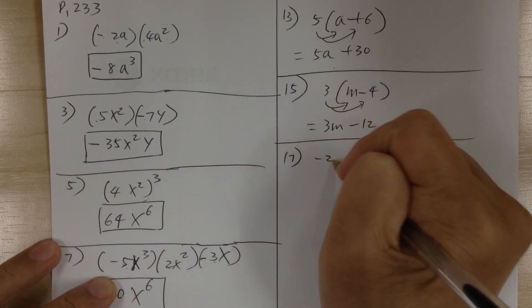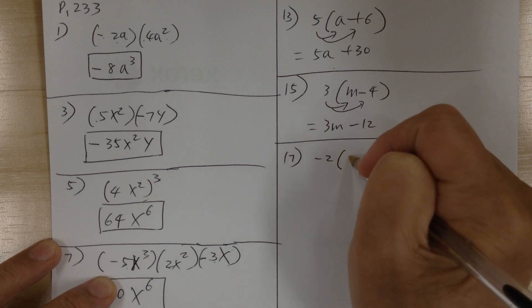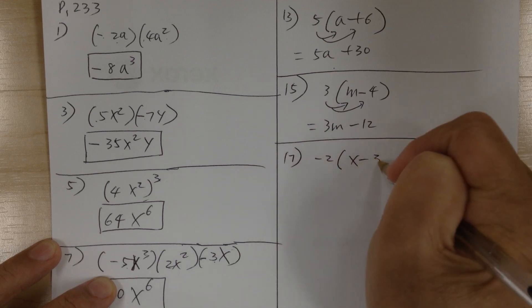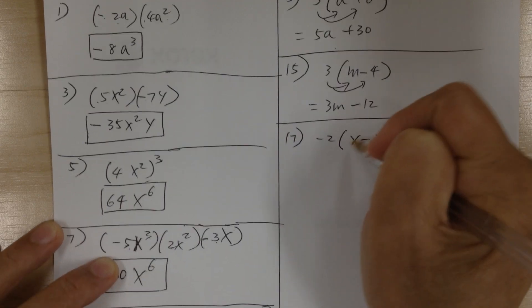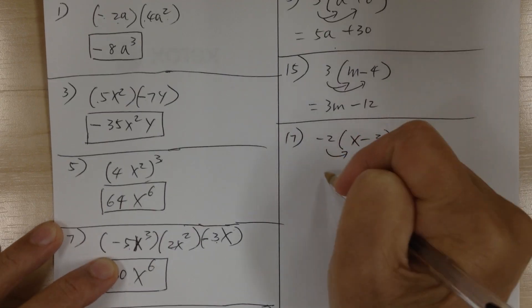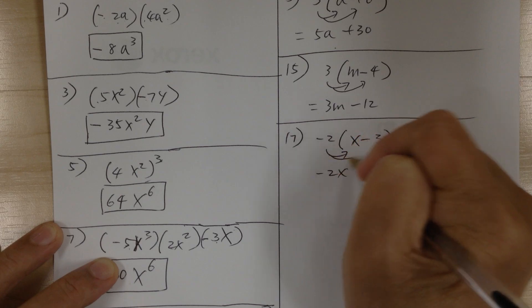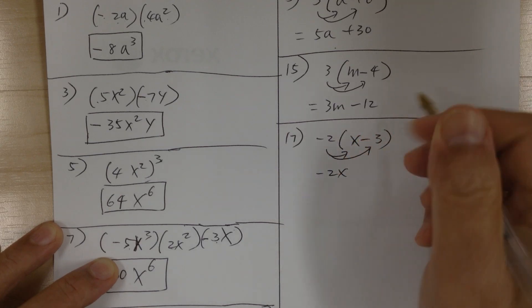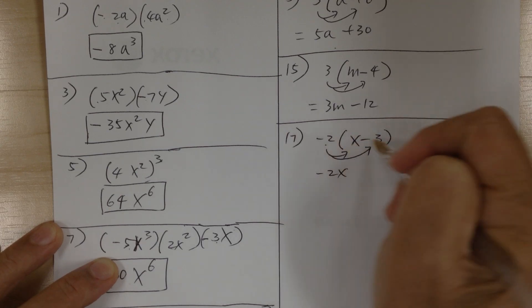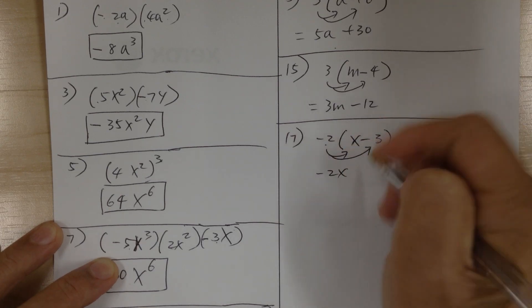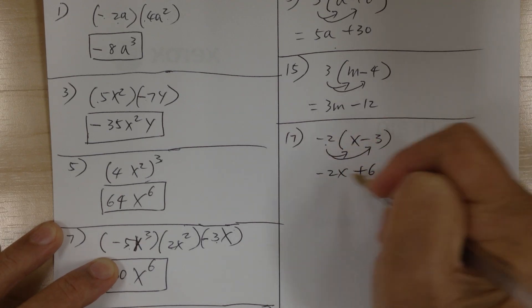Number 17. You have negative 2 times (x minus 3). Use the distributive property. This would be negative 2x. Then distribute: negative 2 times negative 3 gives you plus 6.